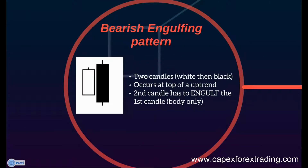The bearish engulfing pattern is also a two candle formation and it comprises of two candles. The first candle is the white candle that you can see here and the second candle is the larger black candle that you can see here. The bearish engulfing pattern always occurs at the top of an uptrend, so its purpose is to turn that trend around back into the downwards direction.